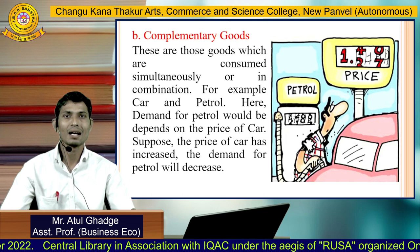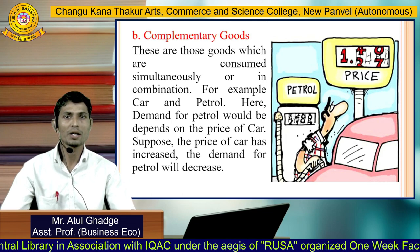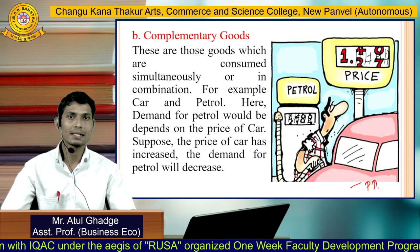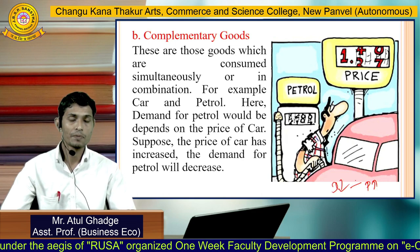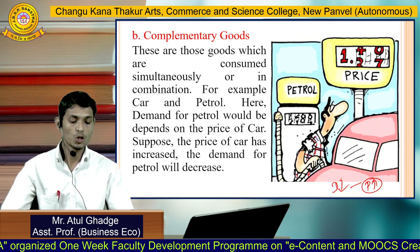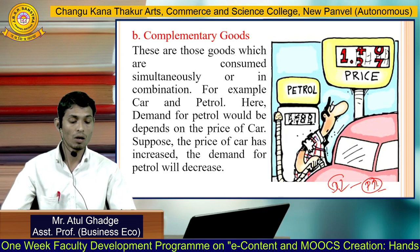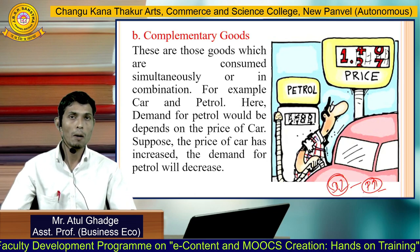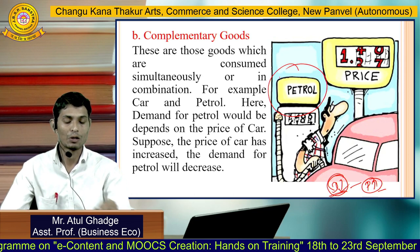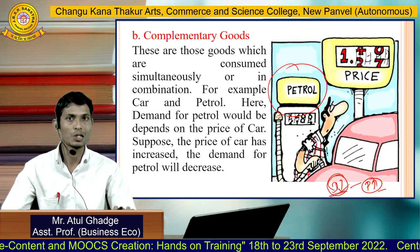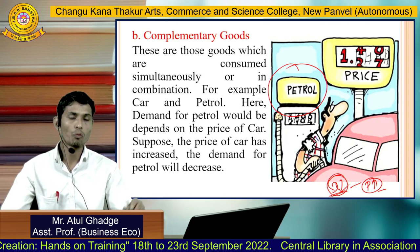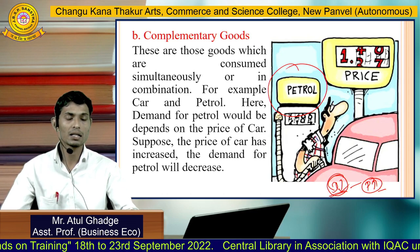Second is complementary goods — those goods which are consumed simultaneously or in combination, for example car and petrol. When the price of a car increases, people demand fewer cars, and therefore it also affects petrol's demand. The price of the car has gone up, so demand for cars will be low, and since fewer cars are purchased, people will not need as much petrol — so demand for petrol will also go down. The price of one commodity decides the demand of another complementary commodity.